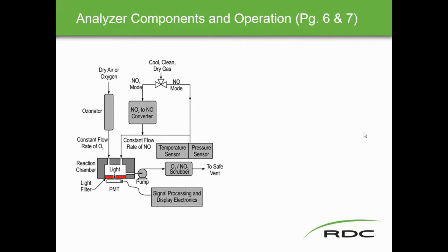Looking at the analyzer components in operation: dry air or oxygen is fed into an ozonator, which converts O2 into O3 (ozone). This is necessary because the core chemical reaction requires ozone and nitric oxide together to produce NO2, oxygen, and emitted light.